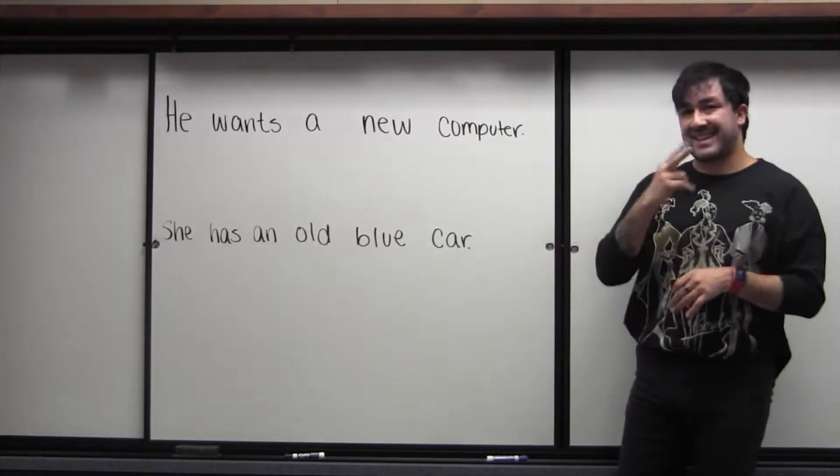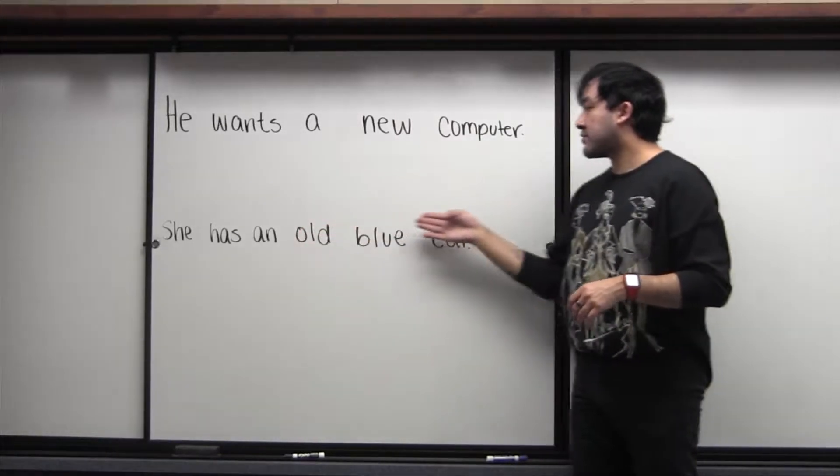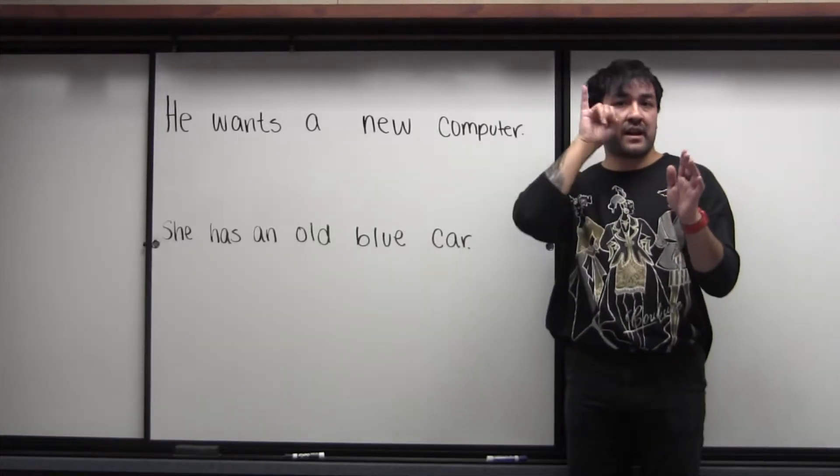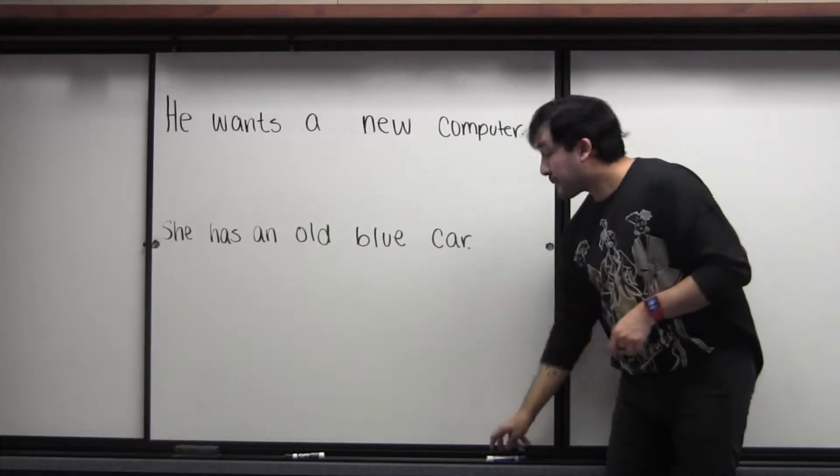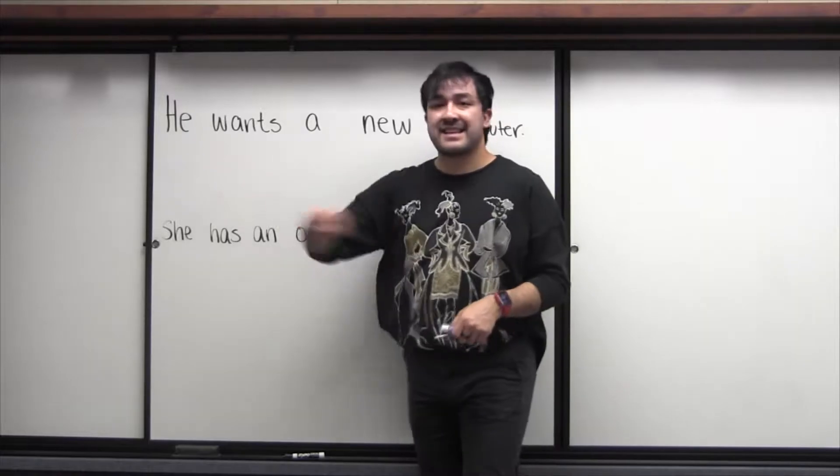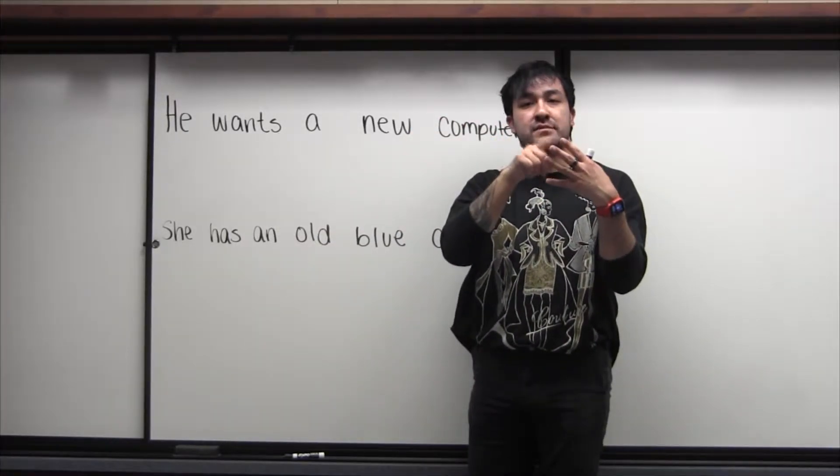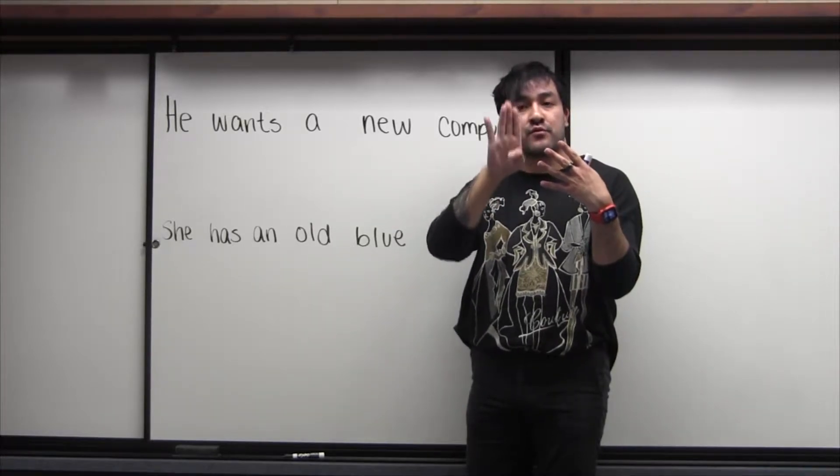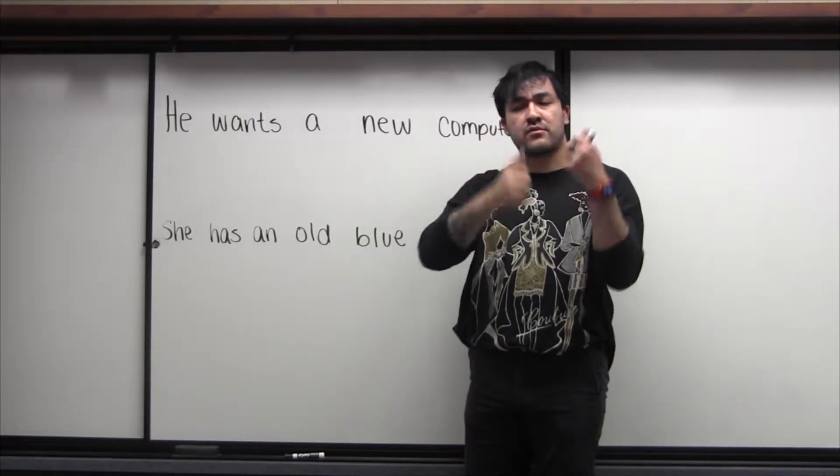So in the first sentence here we have, he wants a new computer. And the second sentence that will be in the second video is she has an old blue car. So remember first, what we're going to do is identify them. And if you don't remember that process, that's in the first basic ASL sentence structure. So we have subjects, we have objects, we have verbs, and we have adjectives for today.